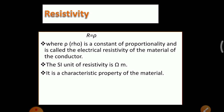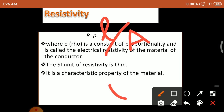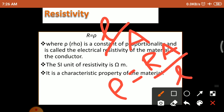In the last class we discussed resistivity and the formula of resistance R equal to Rho L by A, where Rho is a constant of proportionality or electrical resistivity. From this we can write Rho equal to R times A by L. The unit of resistivity is ohm meter, and it is a characteristic property of the material.